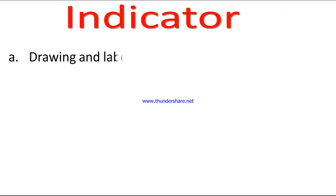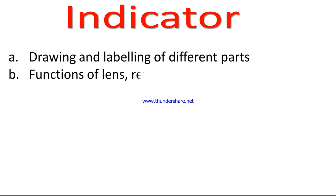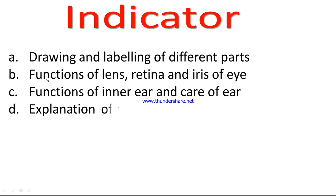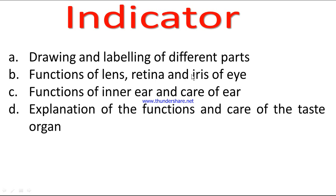Indicators. Number A: drawing and labeling of different parts. Number B: functions of lens, retina, and iris of the eye. Number C: functions of inner ear and care of ear. Number D: explanation of the functions and care of the taste organ.